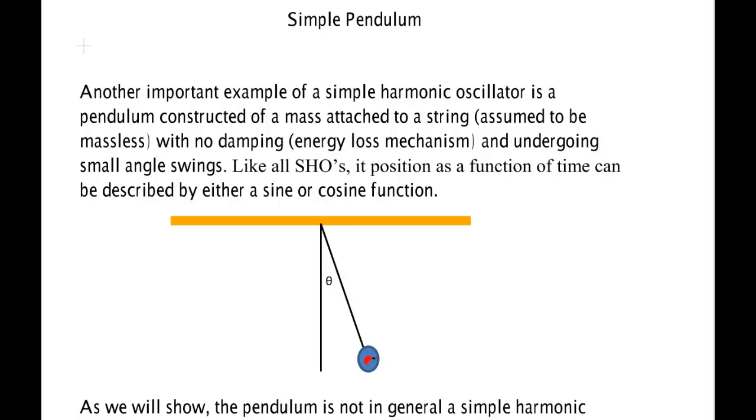We'll assume that mass is very small and so that this length of this string, L, can be considered to be to this point mass. There is an angle here measured in this direction and that angle is theta and that angle needs to be measured in radians.